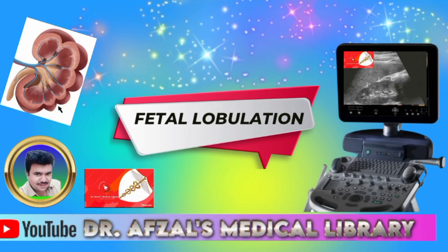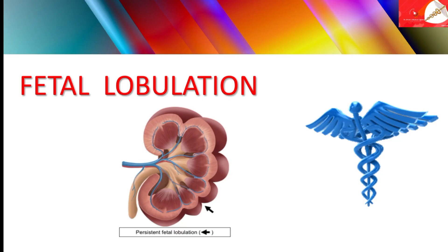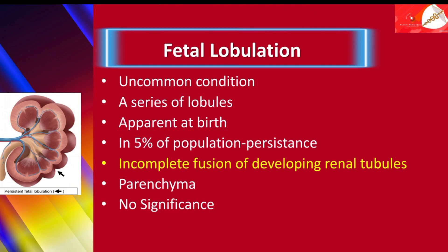Hi, I'm Dr. Sel and the topic is fetal lobulation. Fetal lobulation is a series of 8 to 16 lobules — lobulated structures that remain apparent at birth. This feature disappears as the kidney grows, but in five percent of the population, lobulation persists.